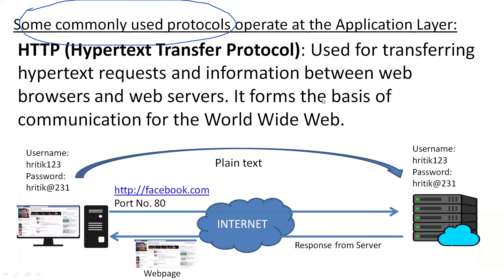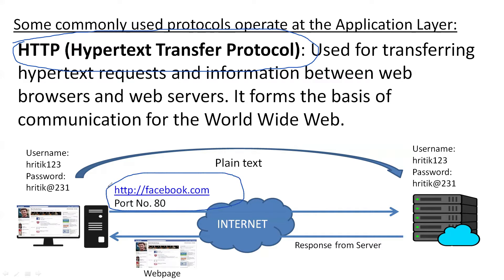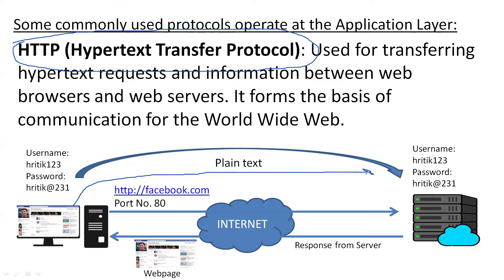There are a number of protocols that work on the application layer. The first protocol is Hypertext Transfer Protocol, known as HTTP. This protocol is responsible for transferring HTTP requests between a web browser and a server. For example, if I want to open facebook.com, an HTTP request will be generated from my PC and forwarded to the server via the internet.